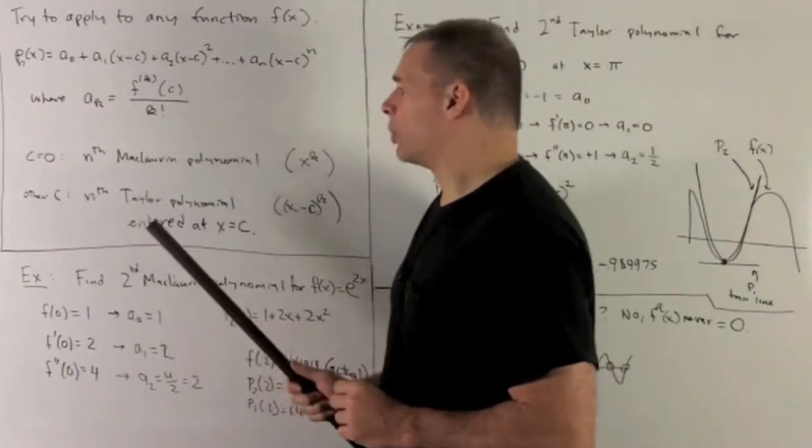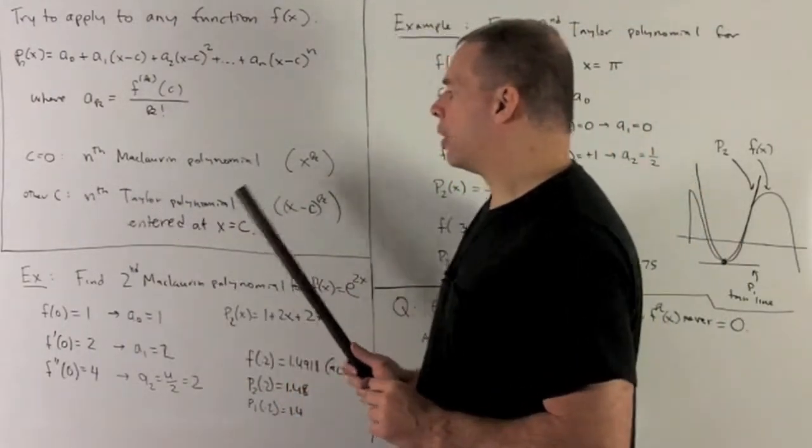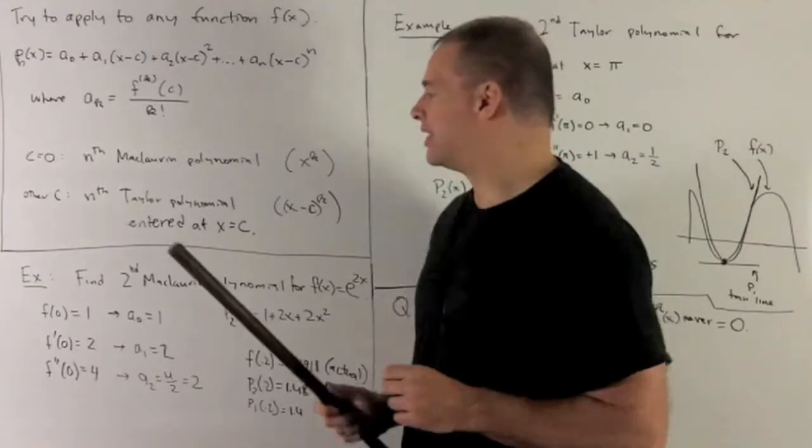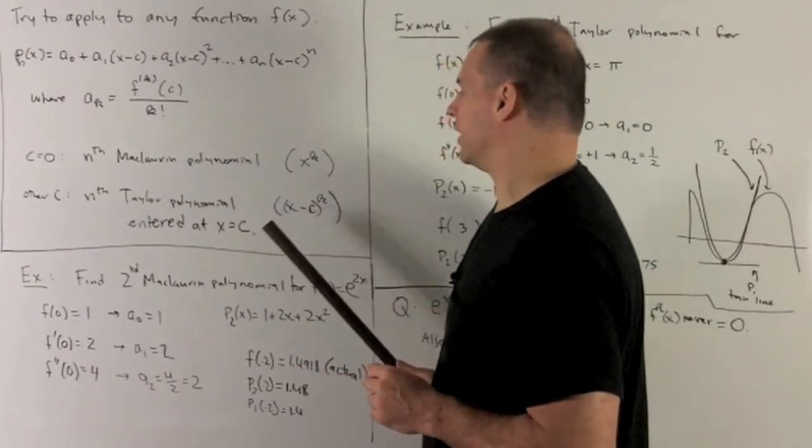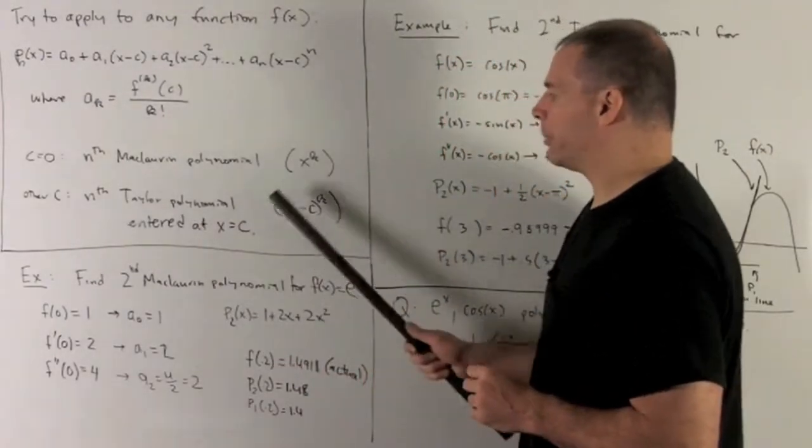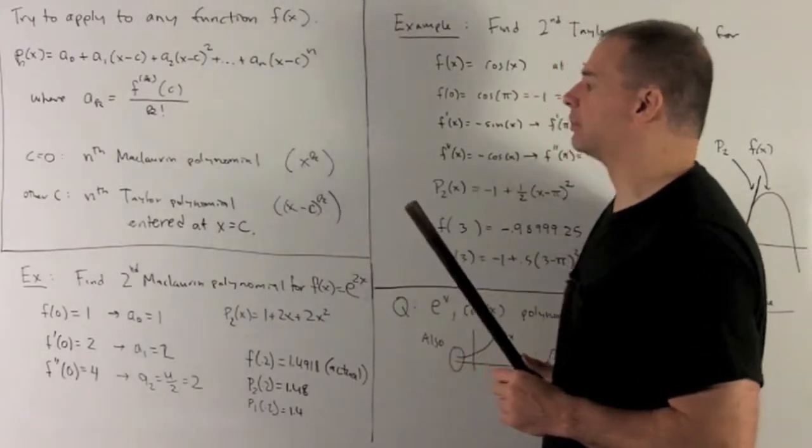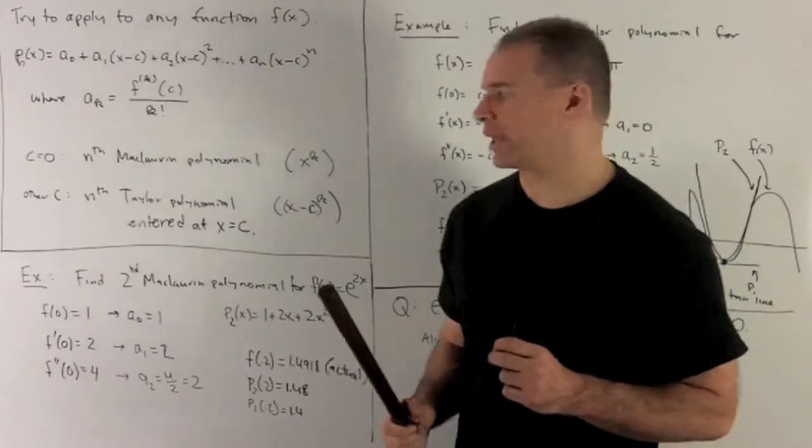For any other c, we'll call this the nth Taylor polynomial for f(x) centered at x equal to c. Here, you're looking at powers of just x minus c. Let's see how we use this.